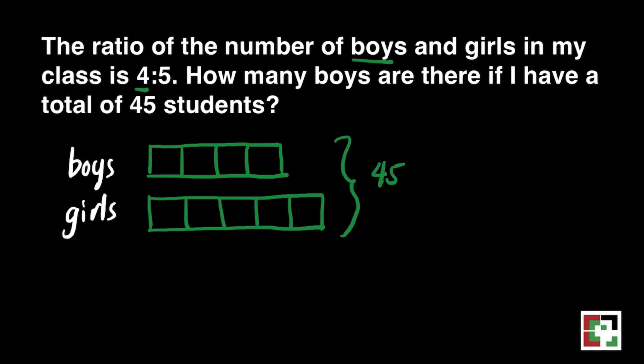The total number of students in my class is 45. How are we going to get the value of each box? We will just divide it by the number of boxes. That's 45 divided by 9. That will give us 5. So, let's write 5 in each box.